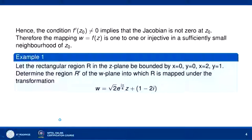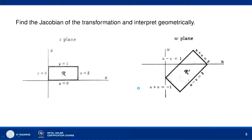Now let us consider an example. Take the rectangular region R in the z-plane bounded by the lines x = 0, y = 0, x = 2, and y = 1. We have to determine the region R' of the w-plane into which R is mapped under the transformation w = √2·e^(iπ/4)·z + 1 - 2i, and also find the Jacobian of the transformation and interpret the result geometrically.